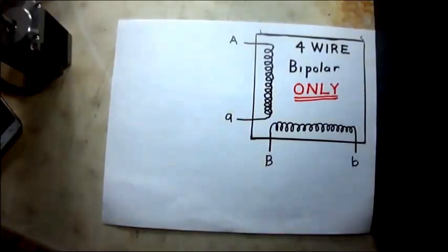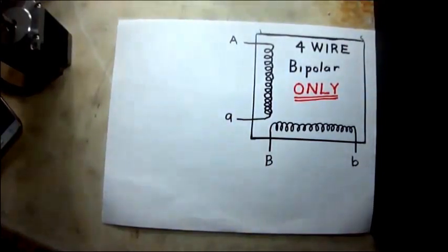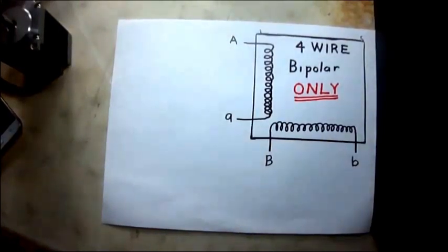To reverse the default direction that this motor turns, if you build your project and it's running the wrong way, simply switch the two wires on the stepper driver for A and lowercase a. Just turn them around and the default direction will be reversed.